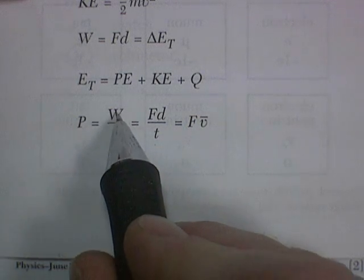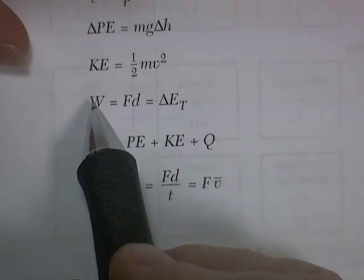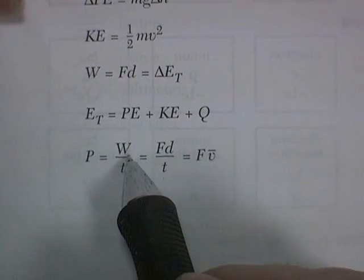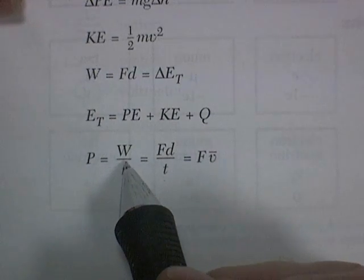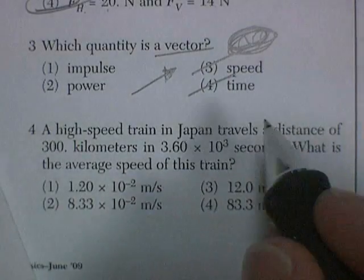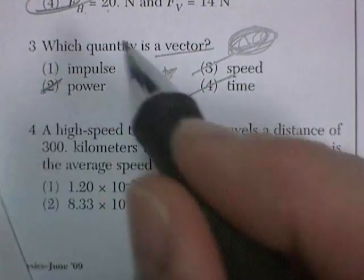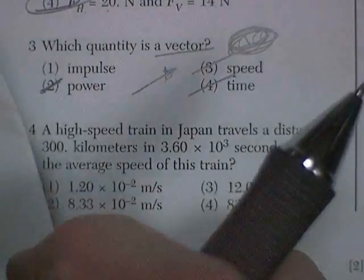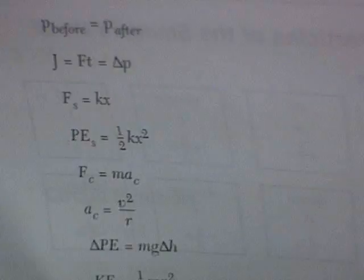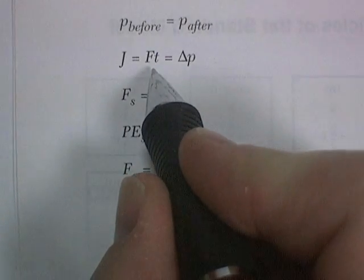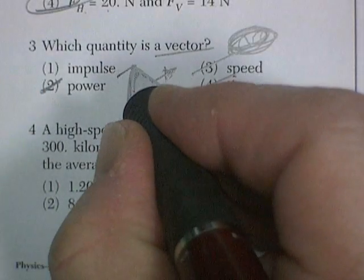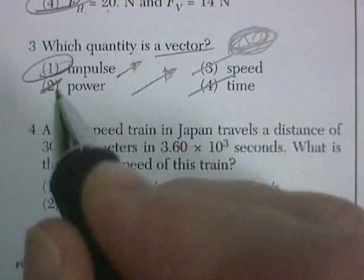But power, the rate at which work is done, work is the ability, or energy is the ability to do work, so it's the consumption of energy over time. Power can be used to describe a light bulb, 100 watts of power, and a light bulb, clearly not a vector. So it's impulse. Now, impulse can be found, and that's J, impulse. And so J is force times time. Now, force is clearly a vector, and force being applied for a period of time would act in a certain direction. So impulse is the vector.